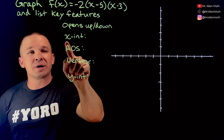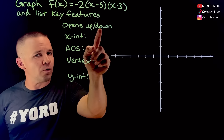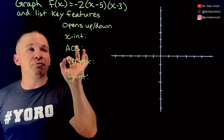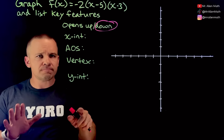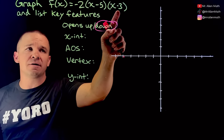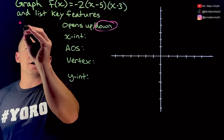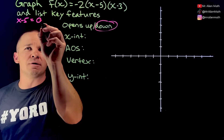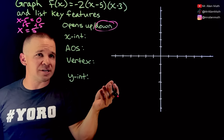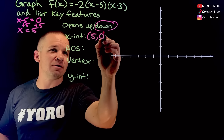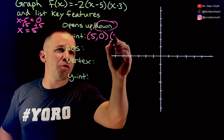This one is in factored form. We're going to get those x-intercepts right off the bat. Is it opening up or down? Since we have a negative out in front, it's going to be opening down. For the x-intercepts, I can take each one of these factors, set them equal to zero, and solve for x. We've got x minus five equals zero, so x equals positive five, giving x-intercept five comma zero. And x minus three equals zero gives us three comma zero.